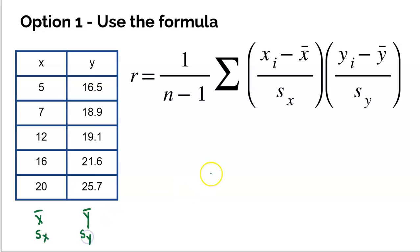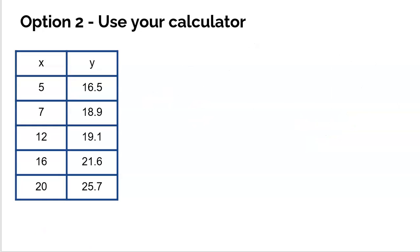Then you'd have to take each x, find the z-score. Each y, find the z-score. Multiply those z-scores together. Add up all of that multiplication. Then you'd have to divide by n minus one. Okay, the point is it's very ugly, very time consuming. You probably don't want to go that route, but that will get you the correlation.